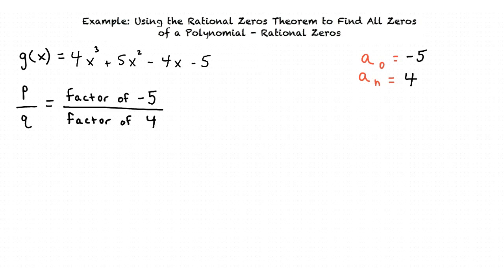Next we must find all the factors of p and q. The possible values of p are the factors of negative 5, which are positive and negative 1 and positive and negative 5. And the possible values of q are the factors of 4, which are positive and negative 1, positive and negative 2, and positive and negative 4.